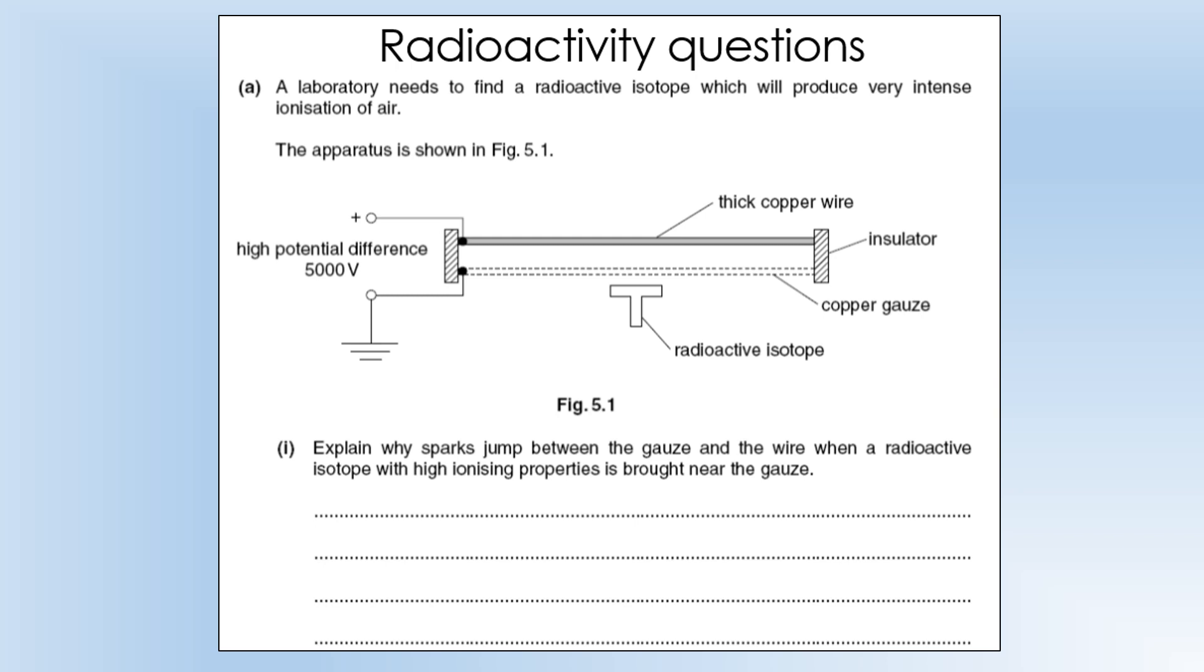The way that we do that is we have two sets of copper: one's just a wire, the other one is a gauze so the radioactive particles can go straight through even if it's alpha. Each of them is connected to a potential difference, so one is very positive and one is very negative. The first thing you want to do: explain why sparks jump between the gauze and the wire when a radioactive isotope with high ionizing properties is brought near to the gauze.